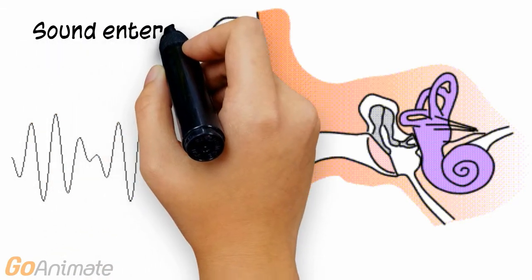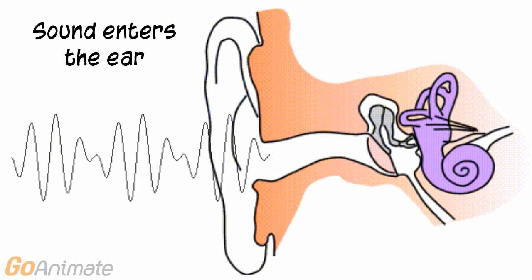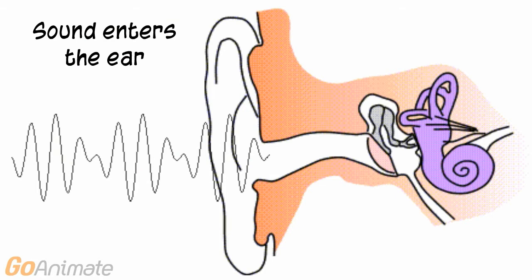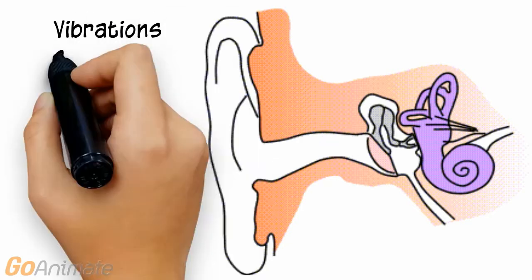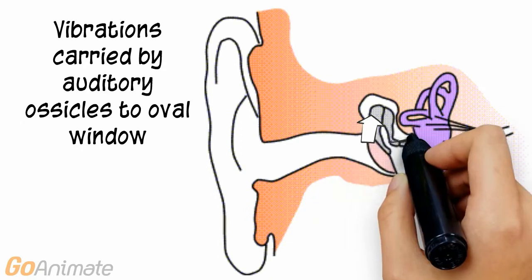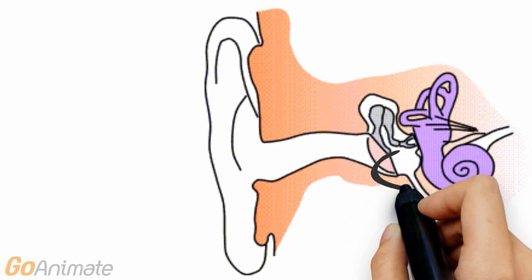Let's look at how sound is processed by the ear. Sound waves enter the external auditory meatus and travel to the tympanic membrane, causing it to vibrate. These vibrations are carried by the malleus, incus, and stapes to the inner ear. The stapes connects to the inner ear at the oval window.